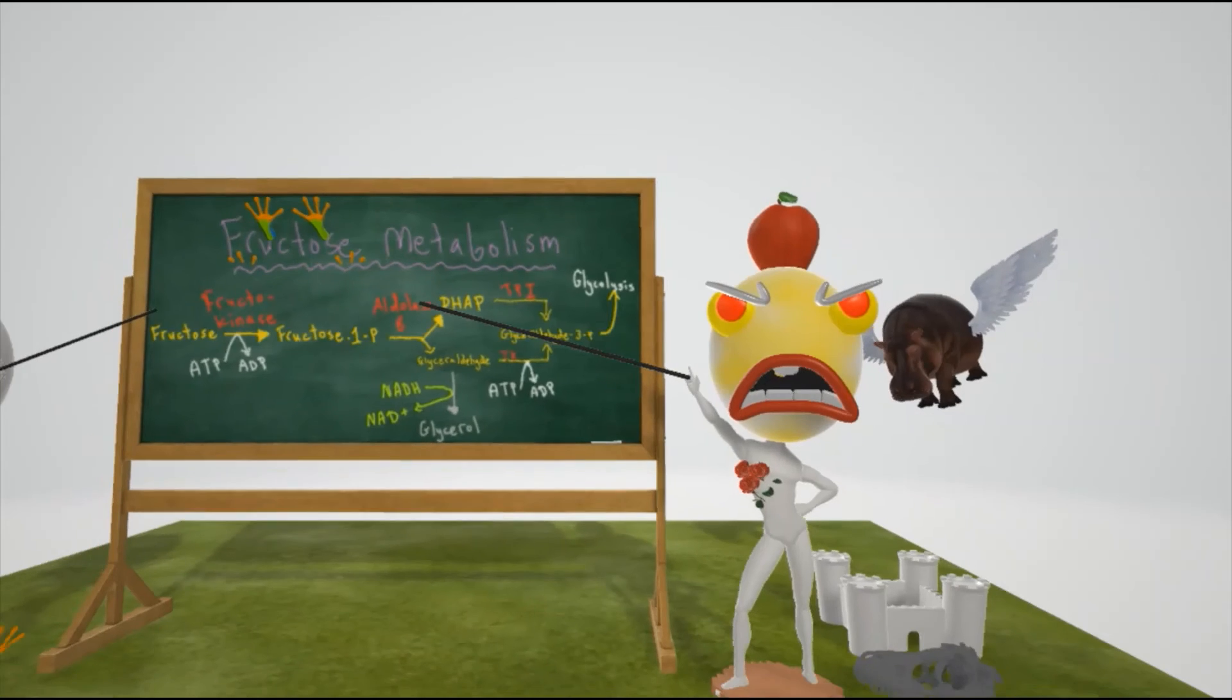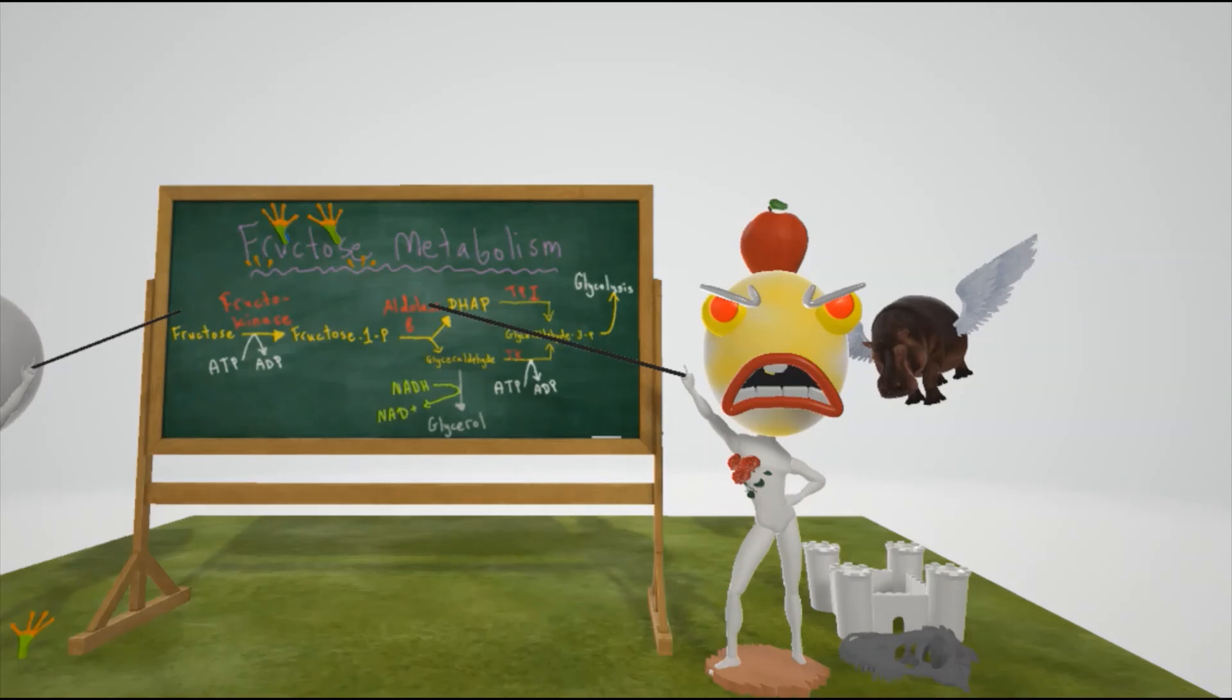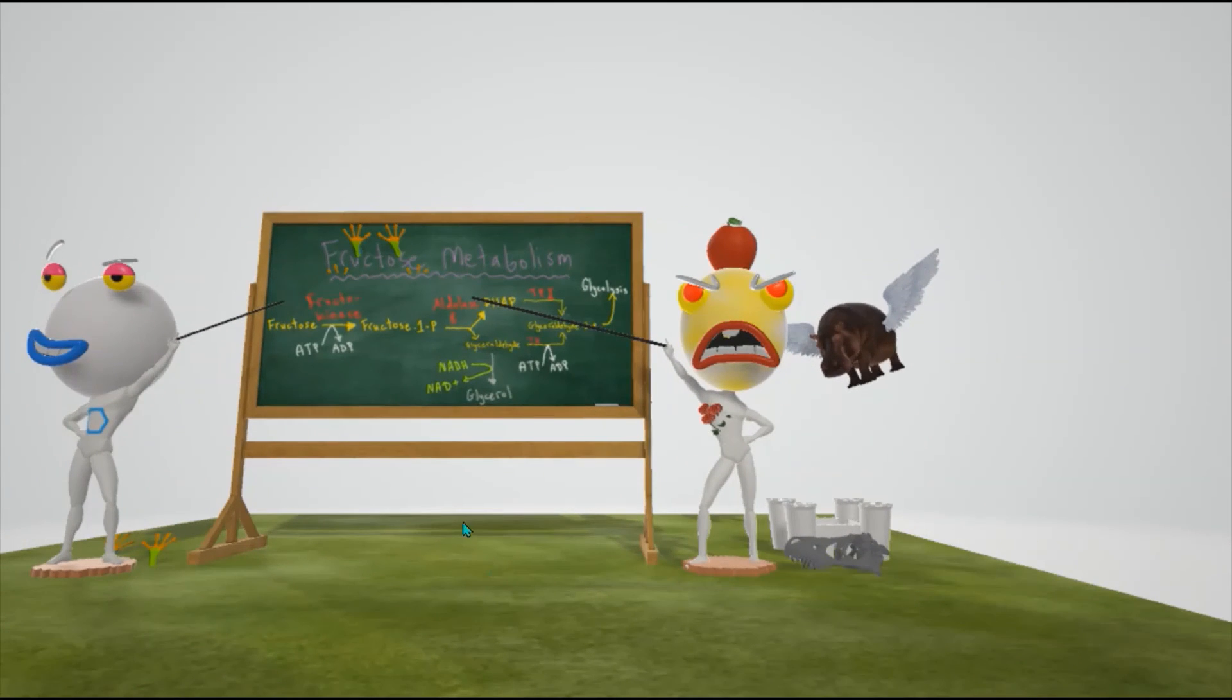Just to mention treatment for hereditary fructose intolerance, a person needs to decrease the intake of fructose, sucrose, since sucrose also has fructose in it, as well as sorbitol, since sorbitol is metabolized to fructose. Both of these teachers are standing on Reese's chocolate because Reese's chocolate comes up in our autosomal recessive videos. Reese's for recessive, as hereditary fructose intolerance as well as essential fructosuria are both inherited in autosomal recessive fashion.